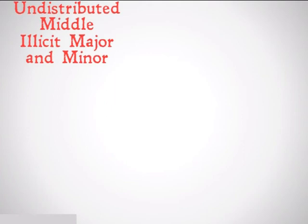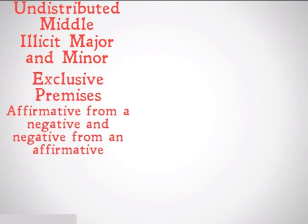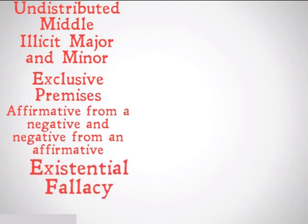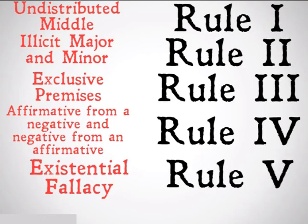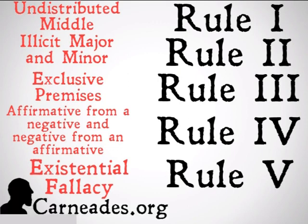That was illicit major and minor. Next up is exclusive premises, followed by affirmative from a negative and negative from an affirmative, and the existential fallacy. Also, take a look on the 100 Days of Logic for the five rules of categorical syllogisms that will be paralleling this series. Watch a new video every single day for 100 days here at carnadies.org, and stay skeptical, everybody.